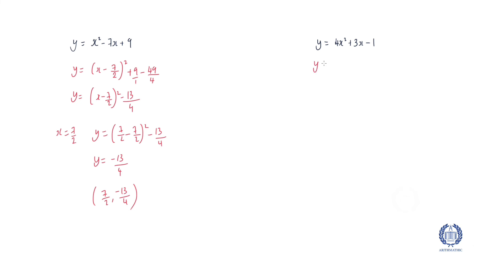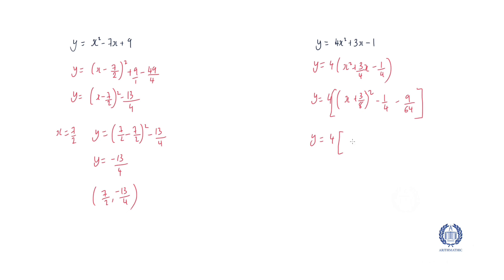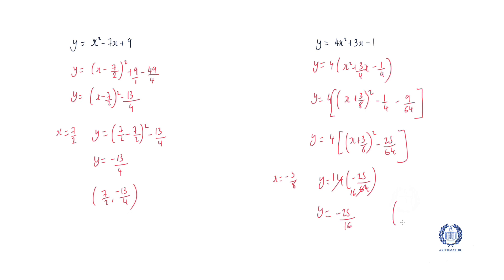Now the next one — we're going to divide everything by 4. So we're going to have 4 bracket x squared plus 3 over 4x minus 1 over 4. Now let's complete the square. So y equals 4 bracket x plus half of 3 over 4 which is 3 over 8, whole thing squared, minus 1 over 4 minus the square of 3 over 8 which is 9 over 64. So then we have y equals 4 bracket x plus 3 over 8 squared. Putting that in the calculator: minus 1 over 4 minus 9 over 64 gives minus 25 over 64. So my x value has to be minus 3 over 8. I'm left with 4 times minus 25 over 64, which simplifies to minus 25 over 16. So my turning point is minus 3 over 8 and minus 25 over 16.